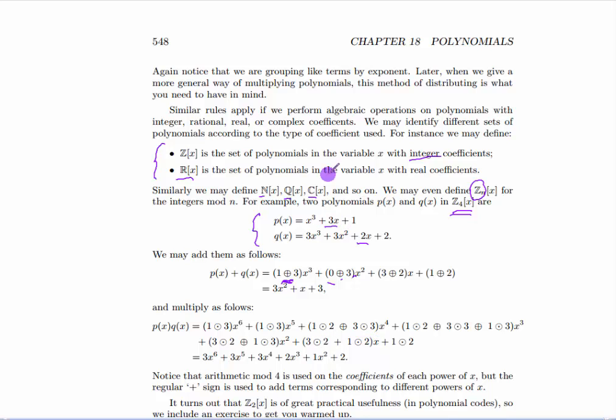And continuing down the line, you'll find that all these coefficients are explained in the same way. Once you do the modular arithmetic on the coefficients, then you end up with a polynomial that's also in Z4.